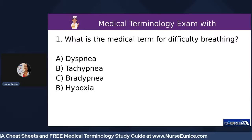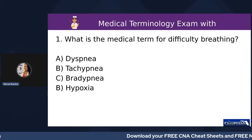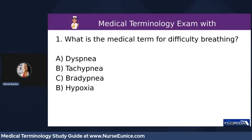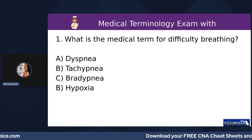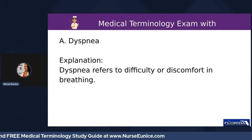Number one: what is the medical term for difficulty breathing? A) dyspnea, B) tachypnea, C) bradypnea, or D) hypoxia. Let's talk about some of these prefixes: 'dys' means difficulty or pain, 'tachy' means fast, 'brady' means slow. So difficulty breathing — 'dys' stands for difficulty or pain — I'm thinking A is the answer.